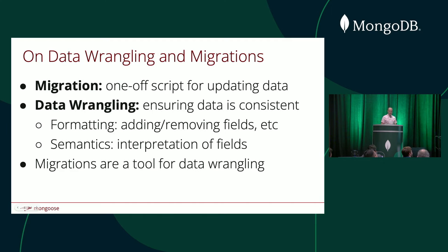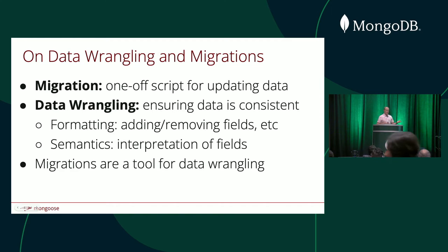So first, let's talk a little bit about what data wrangling is, what migrations are, and what we're talking about here, because definitions really help to frame the problem and define what we're trying to build. Data wrangling, in my experience, is the process of ensuring that data is consistent, both from a structural perspective and a semantic perspective. Migrations are often used to add and remove fields from the database, or change the type of a given field — that's the structural perspective. But we also care about the semantic perspective: we want the data to be correct from a business perspective, we want the data team to look at the data with confidence, we want users to see what they expect when they log in. And a migration is just a one-off script for updating data and making sure that things are consistent in the database.